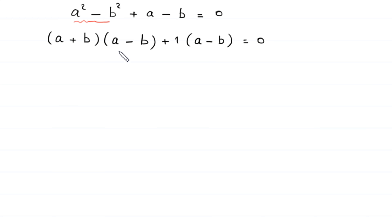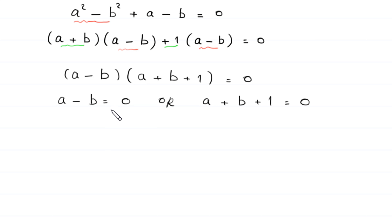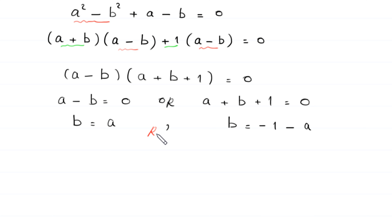Now a squared minus b squared can be factorized as (a plus b)(a minus b), and from the remaining terms we factor out one, leaving a minus b. So we get (a minus b)(a plus b plus 1) equals zero. From here, either a minus b equals zero, which means b equals a, or a plus b plus 1 equals zero, which means b equals negative 1 minus a.